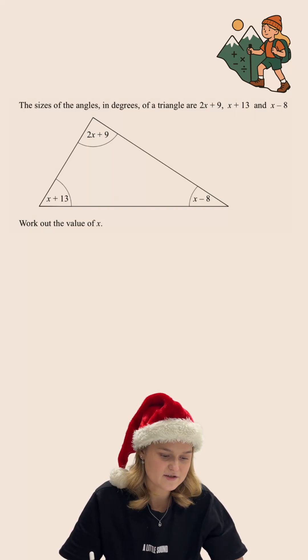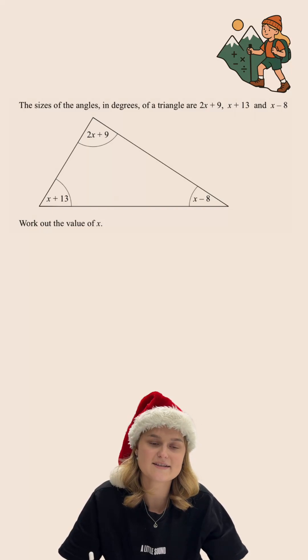The sizes of the angles in degrees of a triangle are 2x add 9, x add 13 and x subtract 8. Work out the value of x.